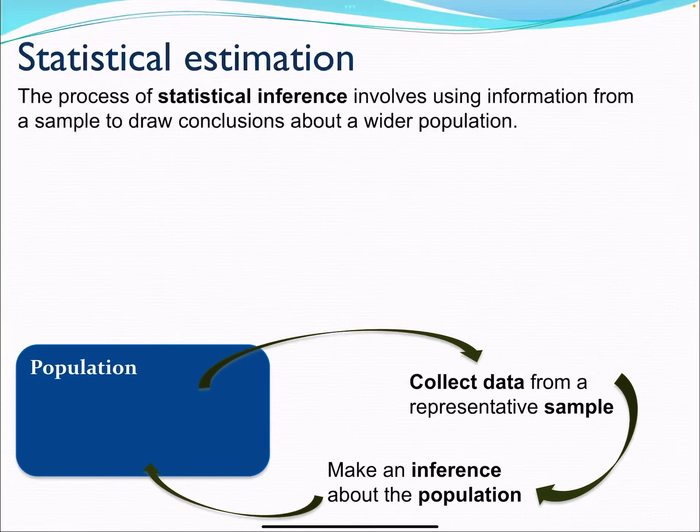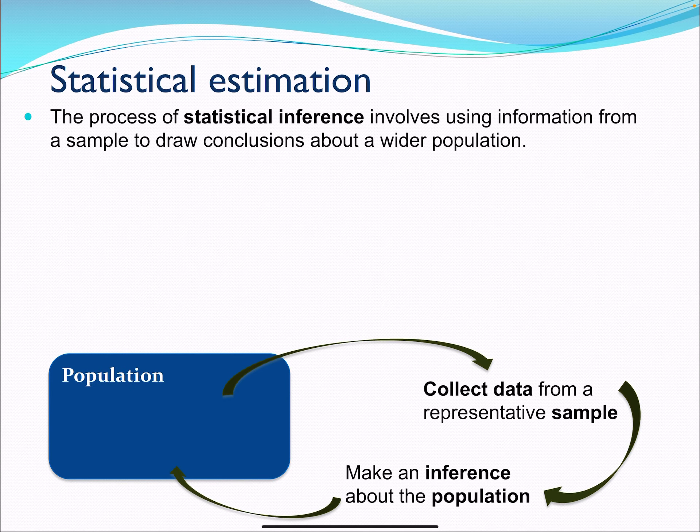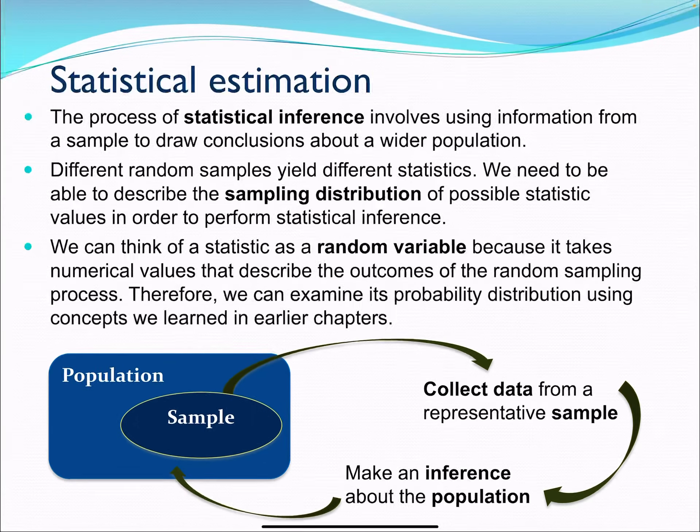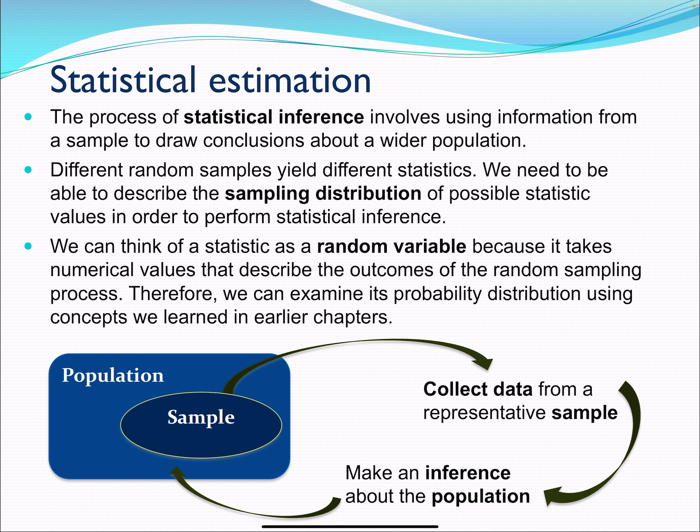Make it all this up on the screen for us. Okay, so the process of statistical inference—this is a big part of statistics—involves using information from a sample to draw conclusions about the population. Because, like we've mentioned before, sometimes it's impossible to survey or speak with or work with an entire population. It's messy. That's a lot, depending upon what your population is. So it's better to take a sample.